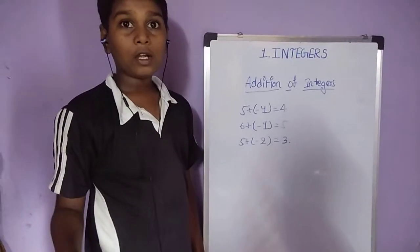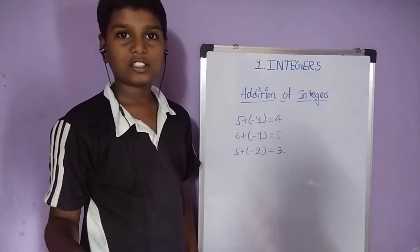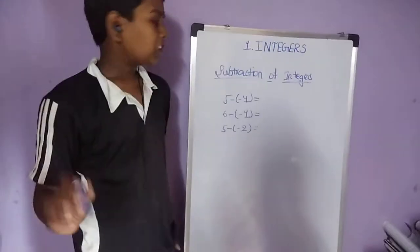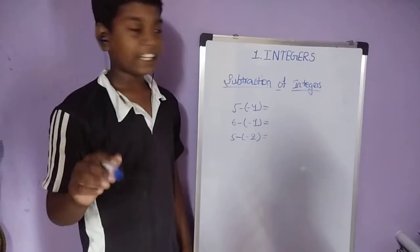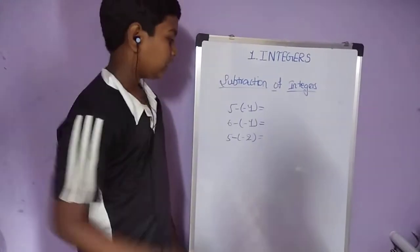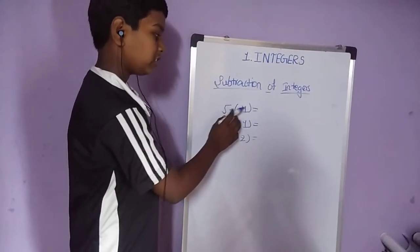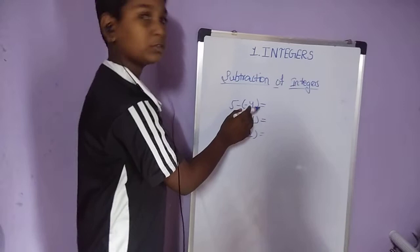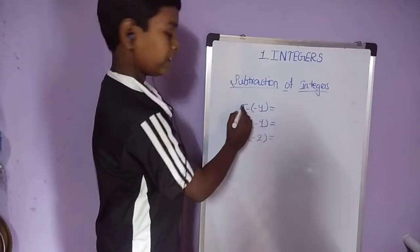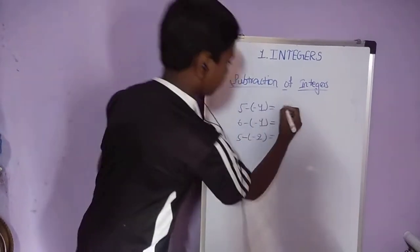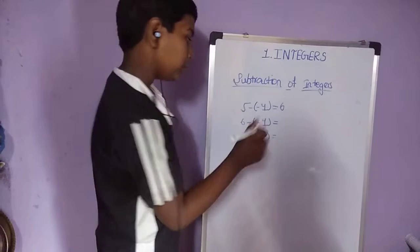Let us do subtraction of integers. What is subtraction of integers? Let us take an example: 5 minus bracket minus 1 close bracket. Minus into minus is equal to plus, so 5 plus 1 is equal to 6.